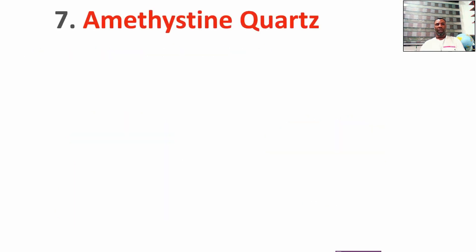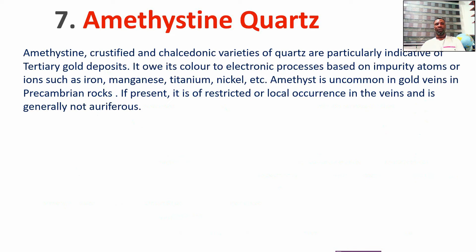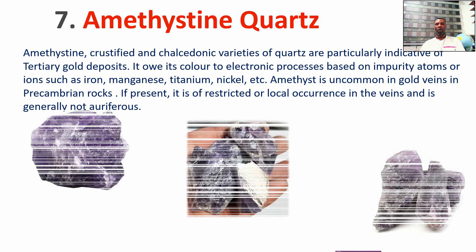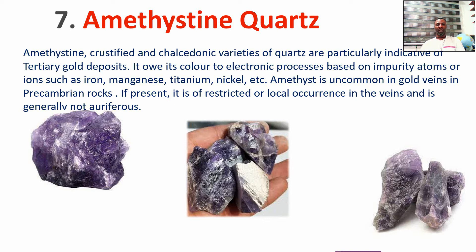The seventh variety is amethyst or metastine quartz, which is purple in color. This quartz is a chalcedonic variety. These colors are based on the properties of atoms such as manganese, chromium, and nickel. However, it is uncommon in gold deposits. Whenever you see them, they are mostly restricted to local occurrences within the vein and are generally not the best indicator to follow.